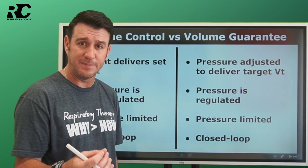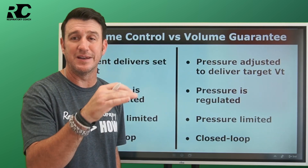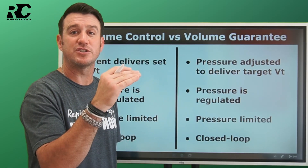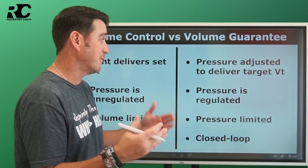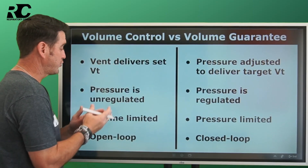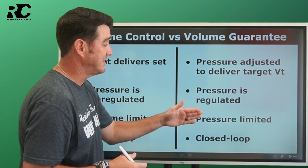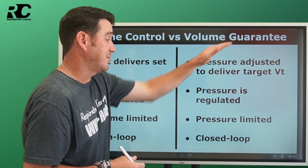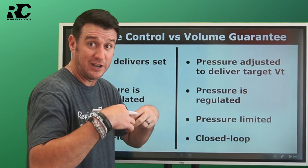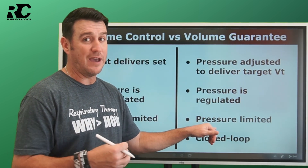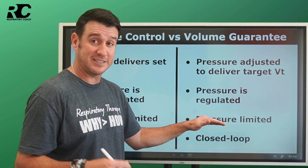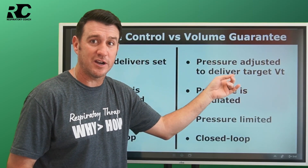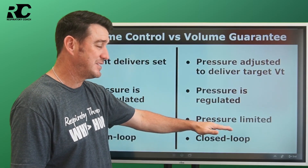Remember: in pressure control, if your patient's lungs become less compliant, volumes go down. So in volume guarantee, the ventilator turns up the pressure because volumes are dropping — it always comes back to compliance and resistance. Volume control is not pressure regulated; volume guarantee is pressure regulated. Volume control is volume limited and will not exceed the set volume. Volume guarantee is pressure limited — internally it will not exceed the set pressure limit. However, if compliance improves and pressure stays the same, you could get a tidal volume larger than target, so the vent will turn the pressure down.